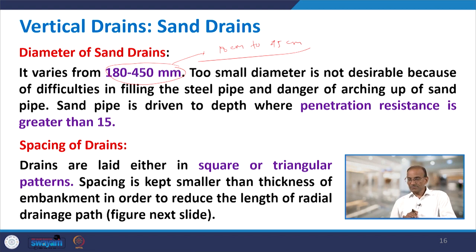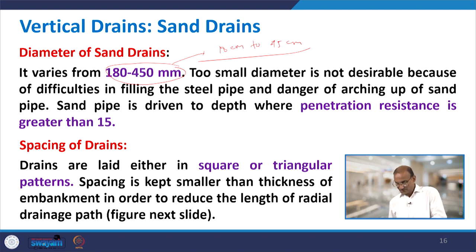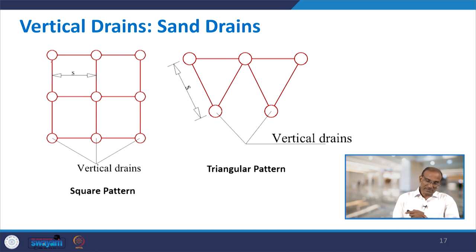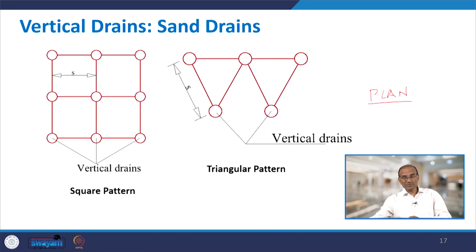The sand pipe is driven to the depth where penetration resistance is greater than 15. Drains are laid in either a square or triangular pattern. Spacing is kept smaller than the thickness of the embankment to reduce the length of the radial drainage path. In plan view, the center-to-center spacing between two drains is shown for both square and triangular patterns, which are the two most popular configurations.